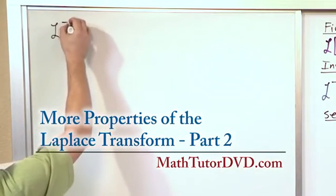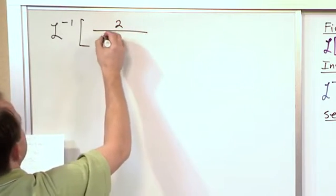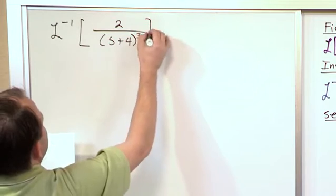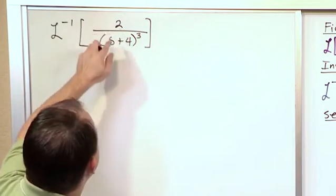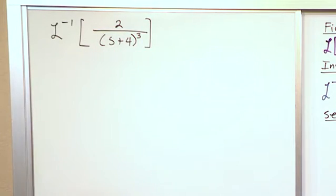Let's say we're doing the inverse Laplace Transform of 2 over s plus 4 raised to the 3 power. If you look in our table, we don't have anything quite like this where there's a constant over s plus a number raised to a power. We don't quite know how to do that,